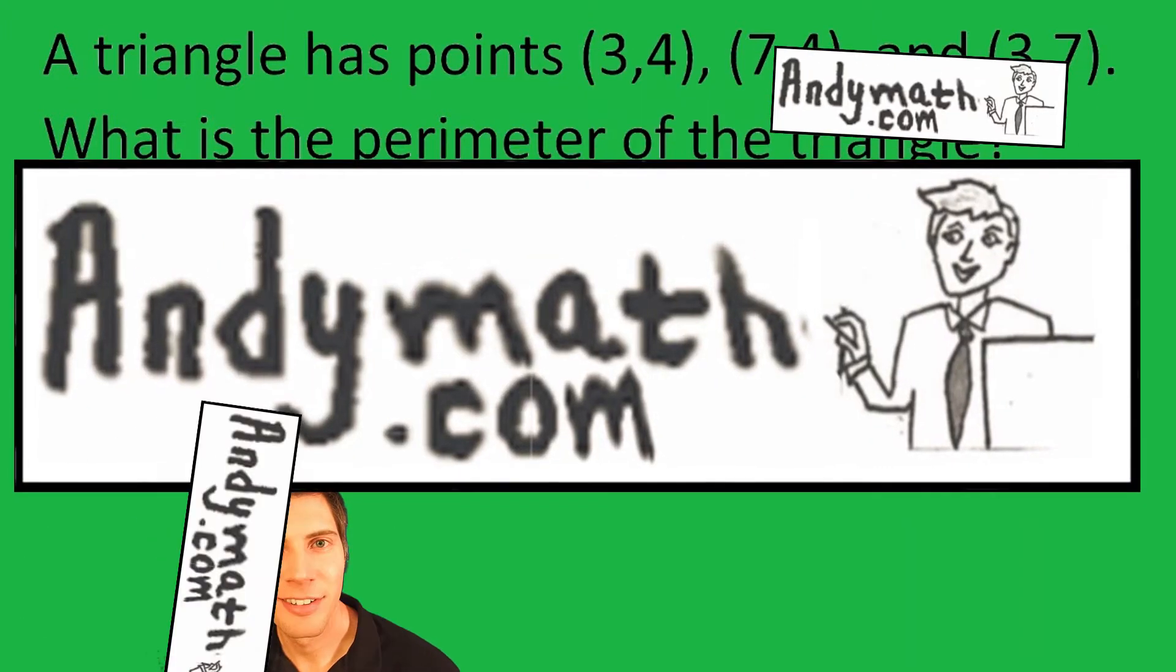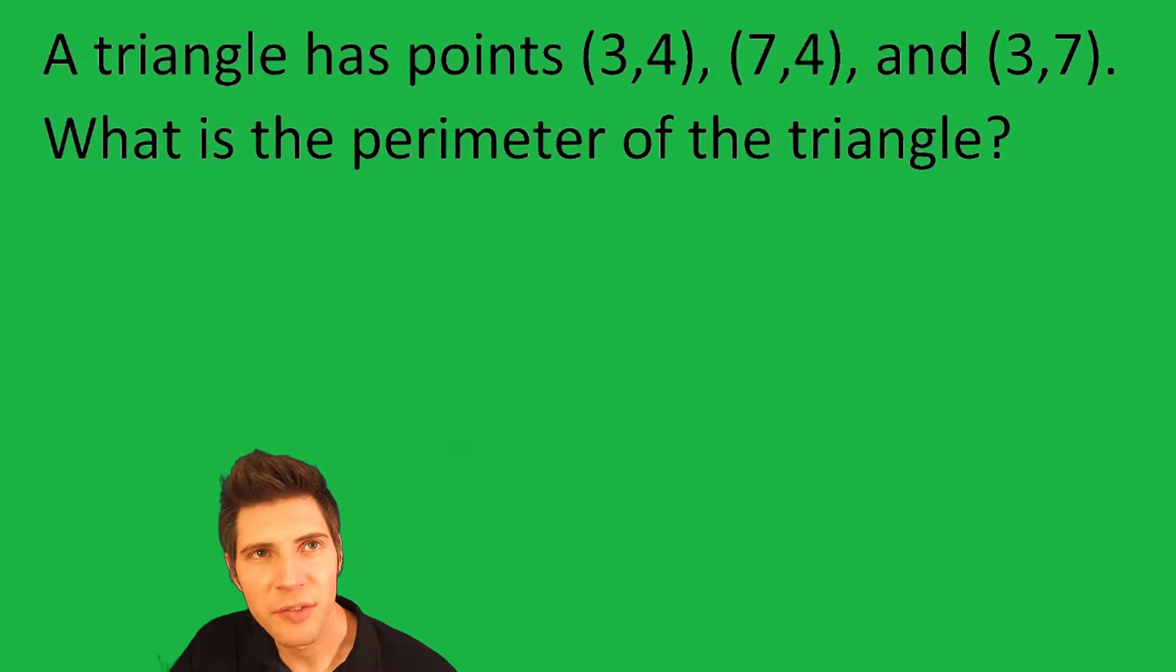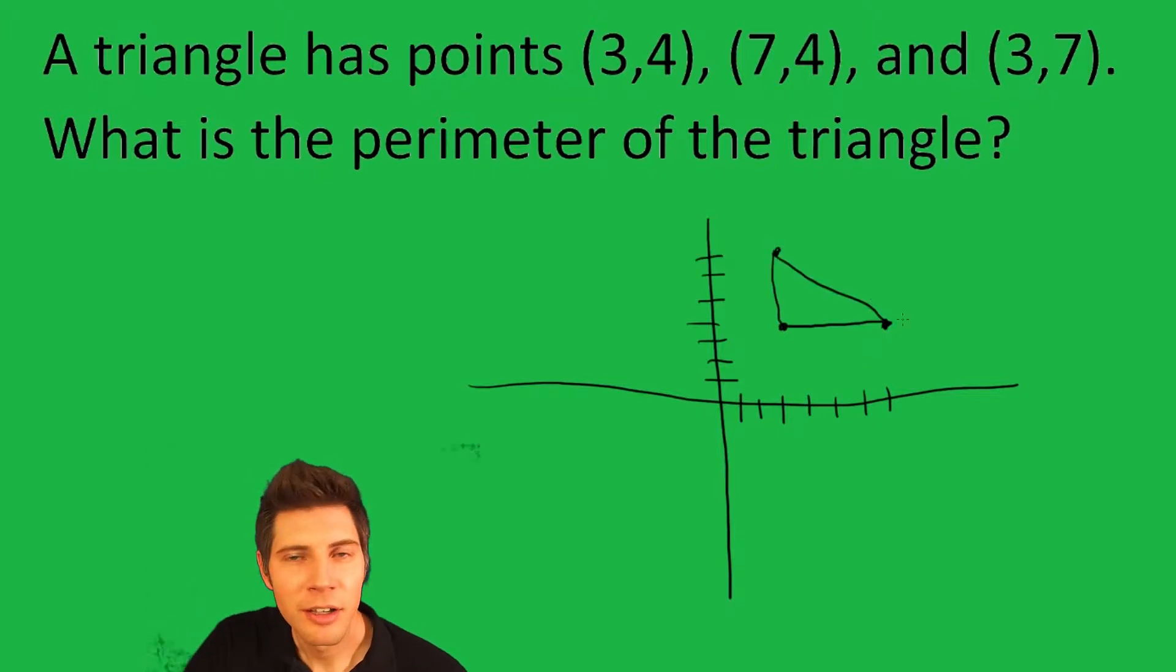Hey guys, welcome to this video. A triangle has points (3,4), (7,4), and (3,7). What is the perimeter of the triangle? We're just going to sketch out this triangle. (3,4) is right there, so that point (7,4) is there, (3,7) is right there, and that is our triangle.